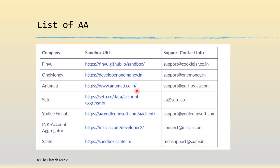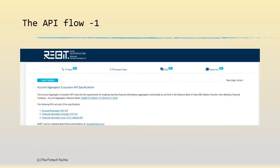Here is a list of account aggregators — not comprehensive, but these are the main ones. Anumati is for IDFC, along with quite a few others. These are the sandbox URLs. The sandbox is a testing system where you can log in and test your APIs as a user or a provider. All the APIs are documented on the RBI's IT website.